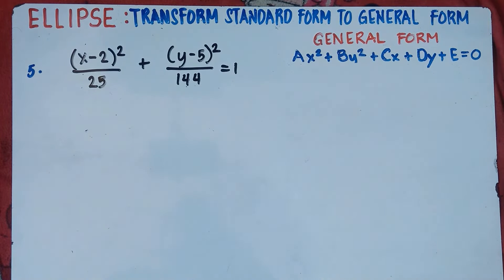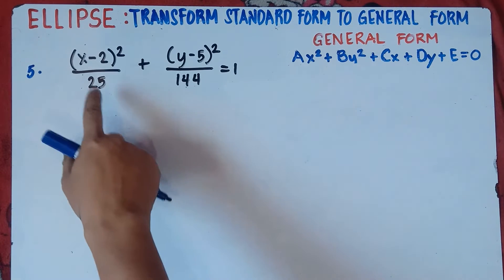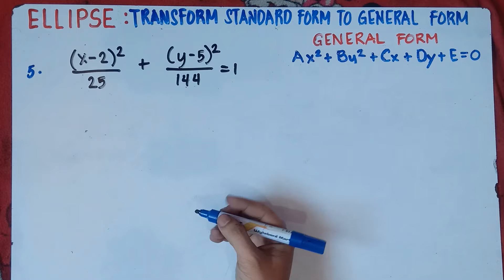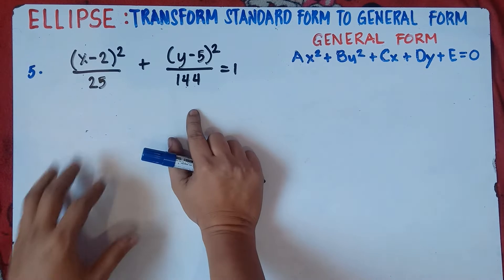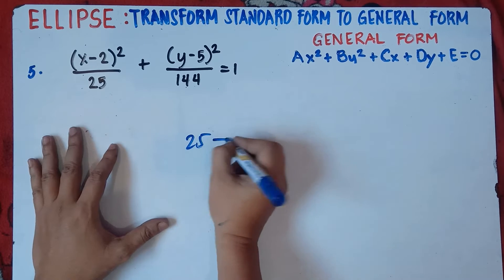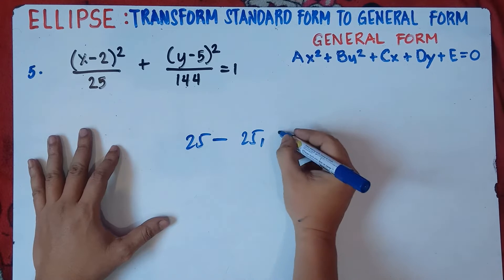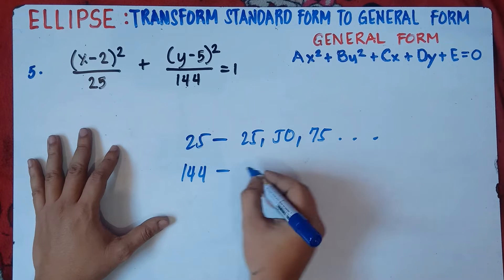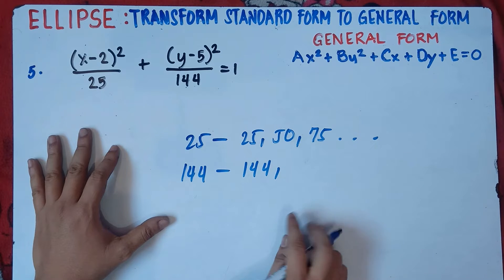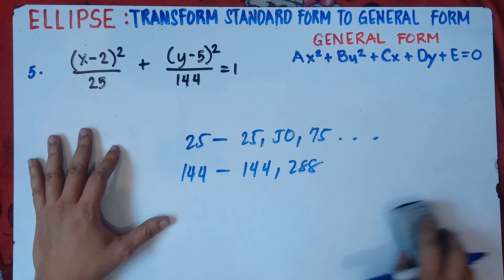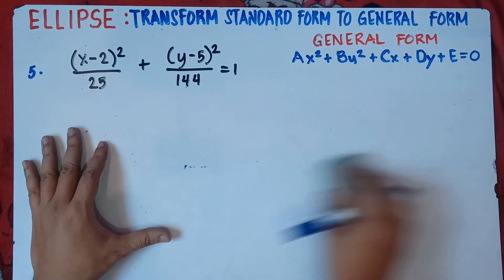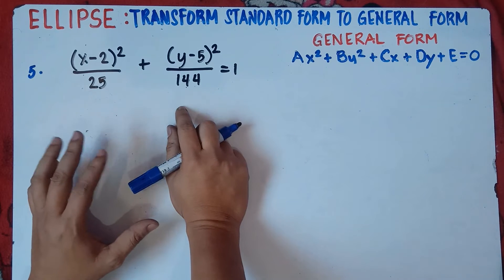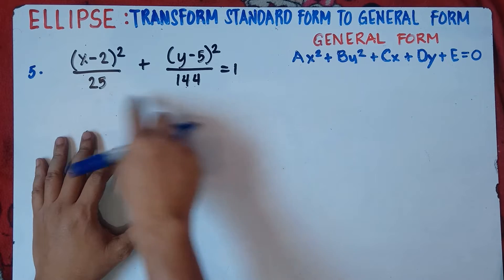How do we do that? You need to find the LCM — the least common multiple. For number 5, it's hard to find the LCM directly because the denominators are 25 and 144, which are large numbers. So we will just multiply 25 times 144 rather than listing multiples manually. The multiples of 25 go 25, 50, 75... and 144, 288... it would really take time. So if you have large numbers in the denominators, just simply multiply them.